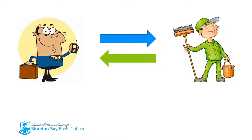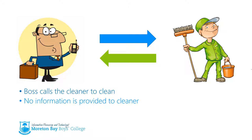The cleaner represents the first type of module that the main program can call. The boss calls the cleaner and says the office needs to be clean. No information is provided to the cleaner — he doesn't tell the cleaner how to clean or what to clean; the cleaner knows what he needs to do. And what's more, the cleaner doesn't call the boss back to say it's done. No information is returned back to the main program.